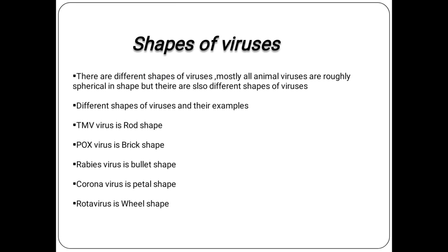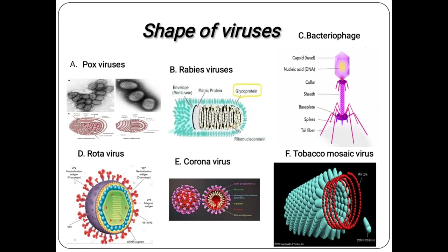Shapes of viruses: there are different shapes of viruses. Most animal viruses are roughly spherical in shape, but different shapes exist. Poxvirus is brick-shaped. Rabies virus is bullet-shaped. Bacteriophage is icosahedral in shape. Rotavirus is wheel-shaped. Coronavirus is petal-shaped. Tobacco mosaic virus is rod-shaped. Ebola virus is filamentous in shape.